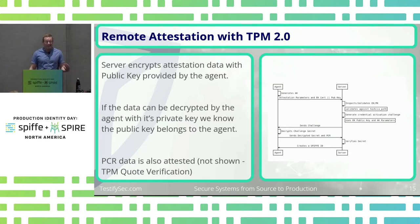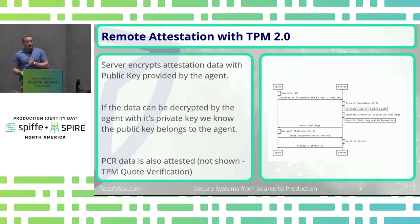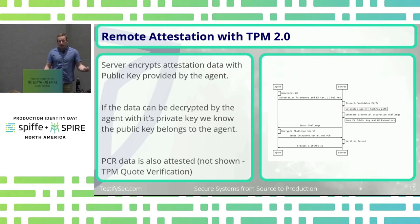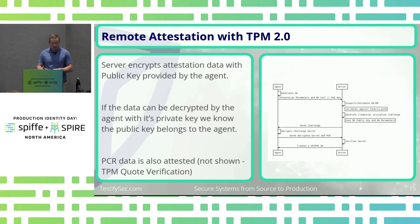So what does this trust actually look like? The server takes the attestation data provided by the agent and encrypts it with the public key. We then ask the agent to decrypt that — if the agent is able to decrypt it, we know the agent owns the private key for the public key we have. We take that public key, hash it, and use it as an identity selector. There's also PCR data that is attested via TPM quote verification to verify that those PCR registers are in fact what they are on the server side.